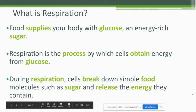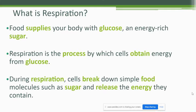We have been talking about photosynthesis and how that works — how plants capture energy from the sun and convert that into food. Respiration is essentially the opposite of photosynthesis in what it needs to use and what it produces, but it's part of a cycle that's connected with photosynthesis. Food supplies your body with glucose, which is an energy-rich sugar and a form of a carbohydrate. Respiration is defined as the process by which cells obtain energy from glucose.